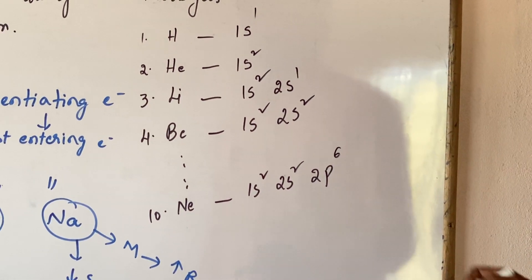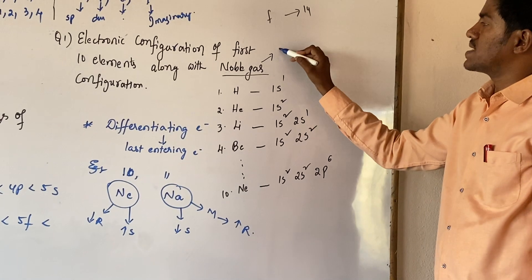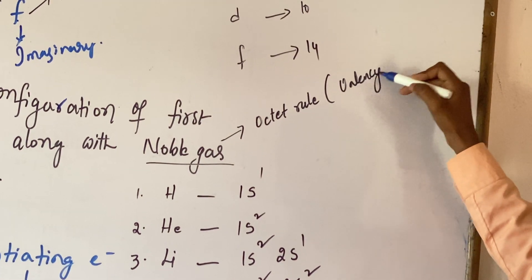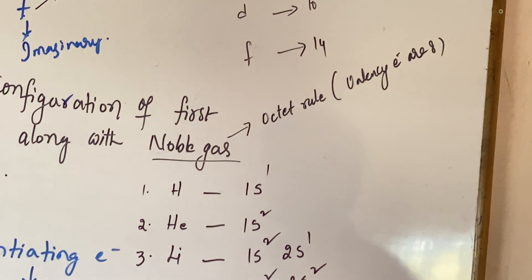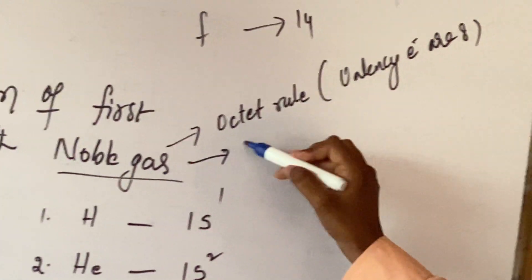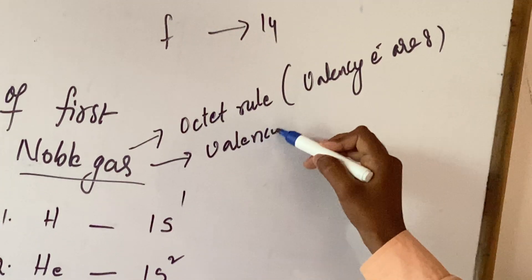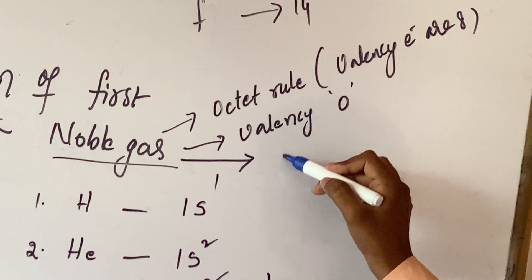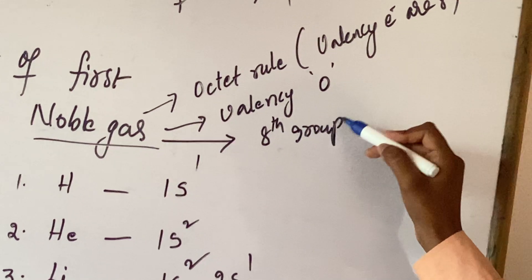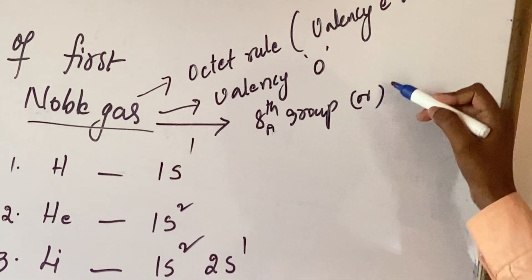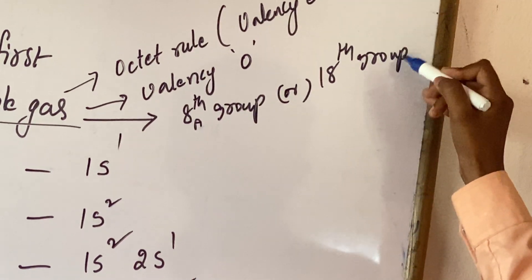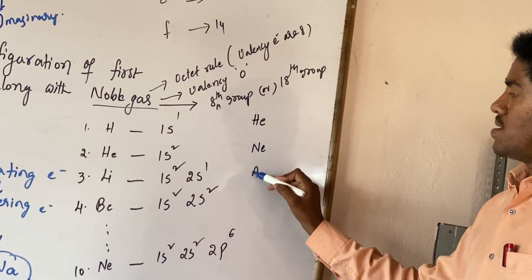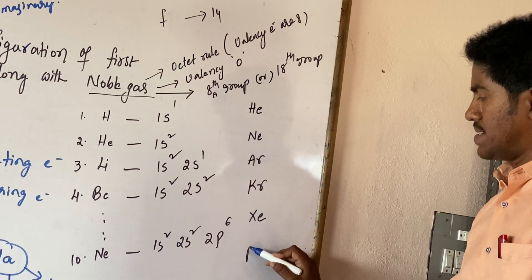Now, coming to the noble gas configuration, what are called noble gases? Noble gases, that can have octate rule, nothing but valency electrons are, valency electrons are 8, totally 8, and the valency of noble gases, 0. Coming to the position of the noble gases, it presents in the 8A, right side, it is 8A group, or 18A. The noble gases are given as: helium, neon, argon, krypton, xenon, radon.